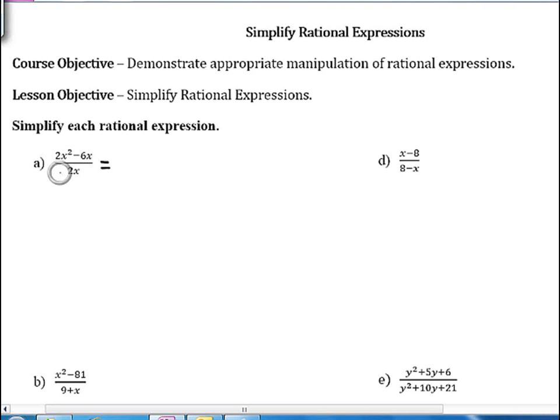Both 2x squared and negative 6x have 2x in common, so we can factor a 2x out of the numerator. We would be left with x minus 3, and then this is divided by 2x. Now we have 2x times x minus 3, and so now we can cancel these 2x. We'll just be left with x minus 3.